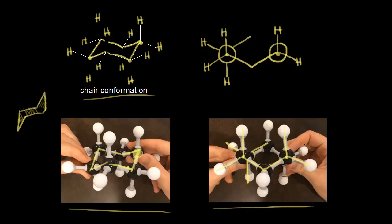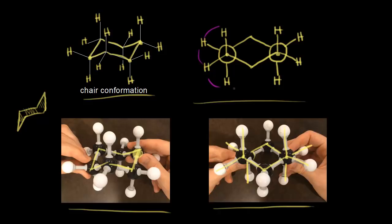Bonding to the back carbon is a hydrogen going up and to the right, a hydrogen going straight down, and then we have a bond from that back carbon going to the other CH2 group. So now we have a Newman projection for the chair conformation. The nice thing about the Newman projection is it shows that all hydrogens are staggered, so we don't have any torsional strain to worry about. With the chair conformation, the bond angles are pretty close to the ideal bond angle of 109.5 degrees — the carbon-carbon-carbon bond angles are approximately 111 degrees. So we don't have to worry about any angle strain, and the chair conformation is the most stable conformation for cyclohexane.